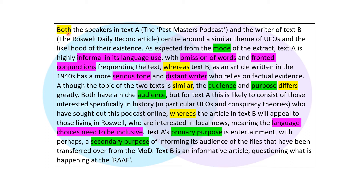So let's read through what I've said. 'Both the speakers in Text A, the Past Masters podcast, and the writer of Text B, the Roswell Daily Record article, centre around a similar theme of UFOs and the likelihood of their existence. As expected from the mode of the extract, Text A is highly informal in its language use, with elision of words and fronted conjunctions frequenting the text, whereas Text B, as an article written in the 1940s, has a more serious tone and a distant writer who relies on factual evidence. Although the topic of the two texts is similar, the audience and purpose differs greatly. Both have a niche audience, but for Text A this is likely to consist of those interested specifically in history, in particular UFOs and conspiracy theories, who have sought out this podcast online, whereas the article in Text B will appeal to those living in Roswell who are interested in local news, meaning the language choices need to be inclusive.'